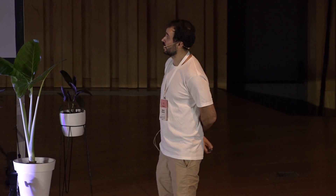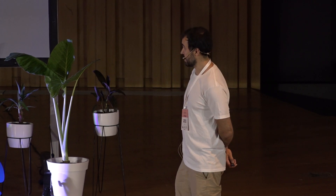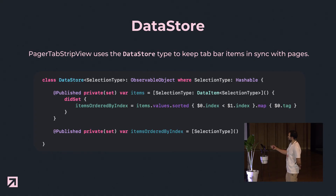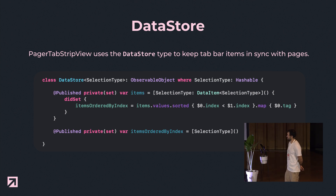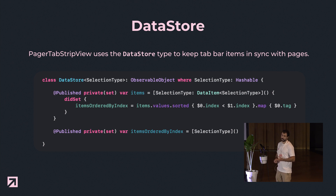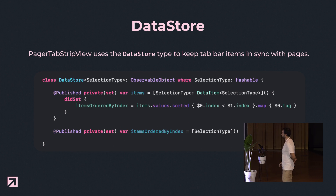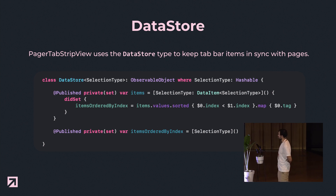For that, we declare a type called DataStore that has an ordered list of the pages — basically just the tag information and the selected type. This property is published in order to let the views automatically update on changes. We also have a dictionary that holds every page's information, like the position and the tab bar item view, which can be any view — so it's fully customizable. We hold this information in the DataStore.